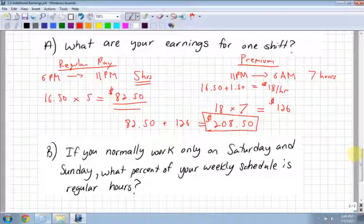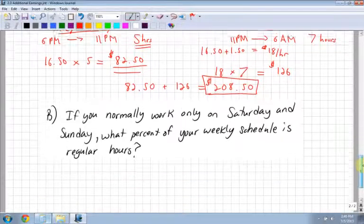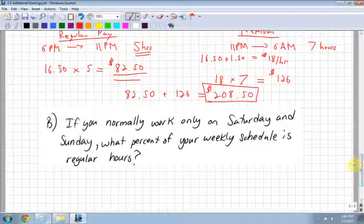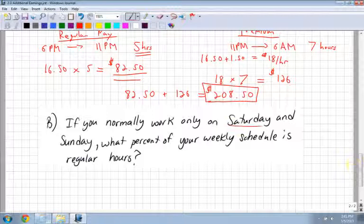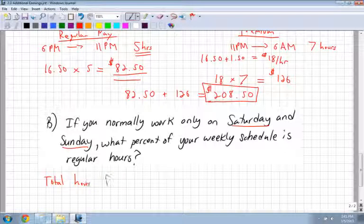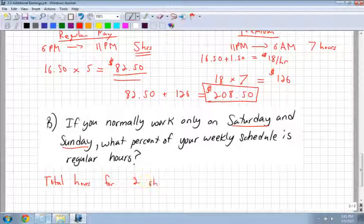Now, if you normally work only on Saturday and Sunday, two days, two shifts, what percent of your weekly schedule is regular hours? Your weekly schedule would just be two days a week—Saturday and Sunday. Let's see, how many hours would I work on Saturday and Sunday?